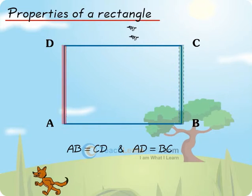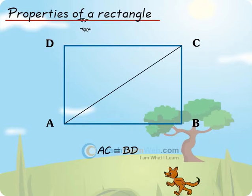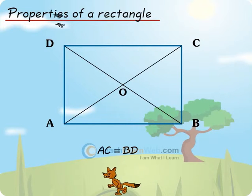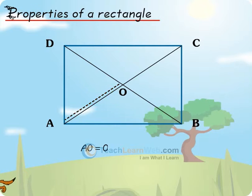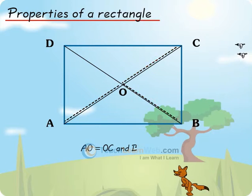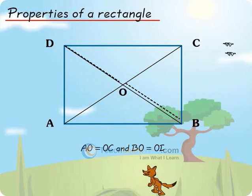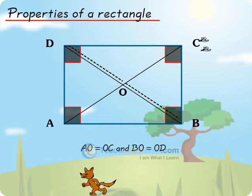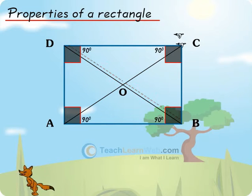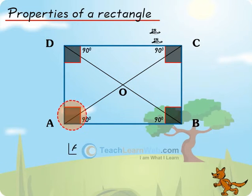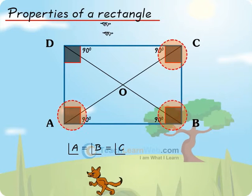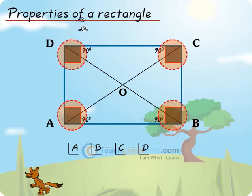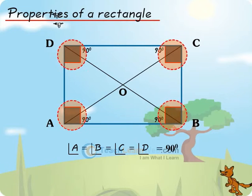Its diagonals are equal, that is AC = BD. Its diagonals bisect each other, that is AO = OC and BO = OD. Each of its angles measures 90 degrees — that is, angle A = angle B = angle C = angle D = 90°.